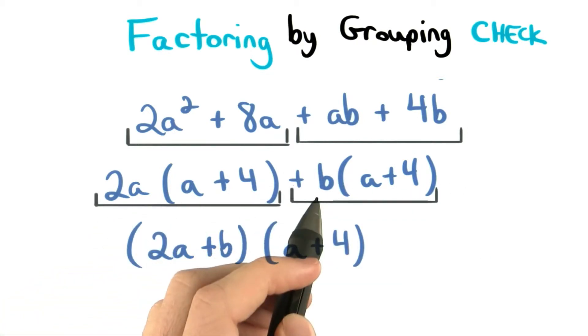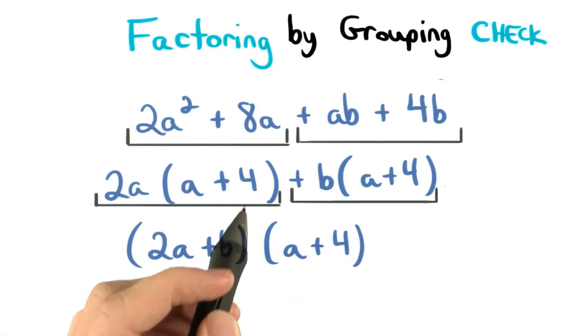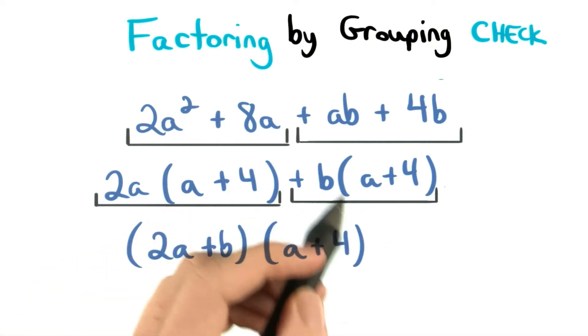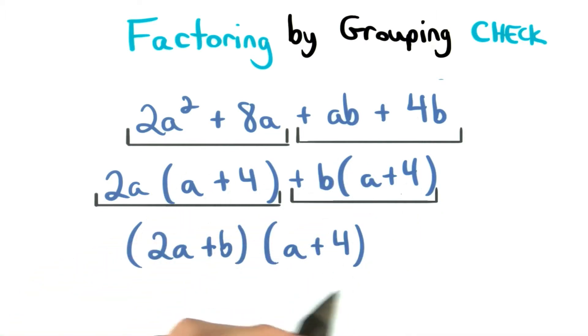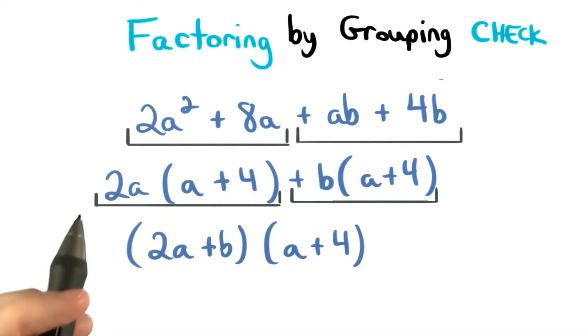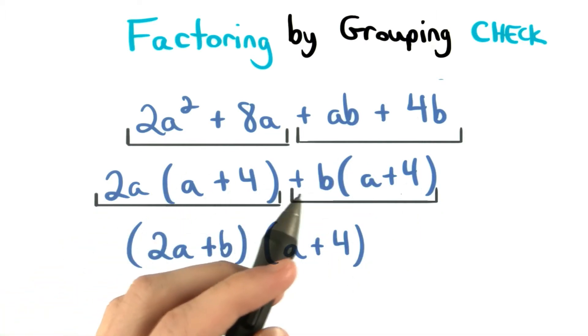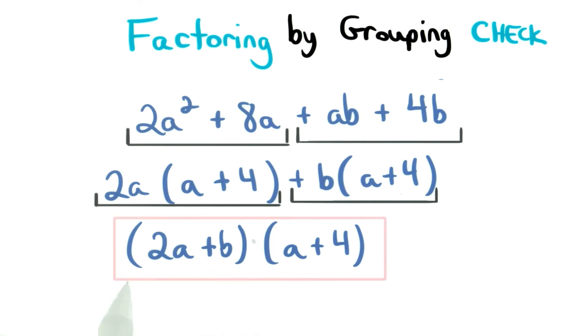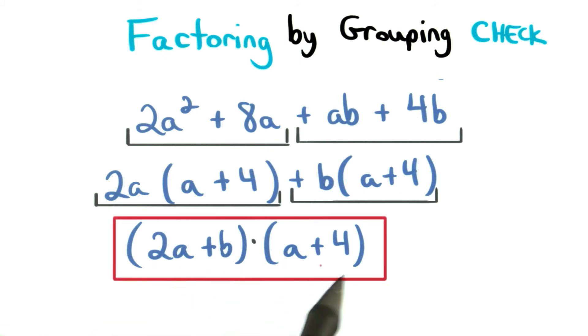Now, this term and this term share an a plus 4, so we can factor that out, leaving us with 2a plus b. And here are our two factors.